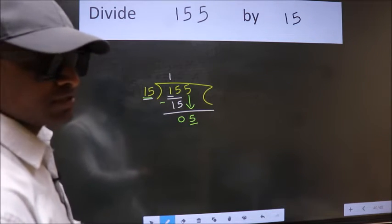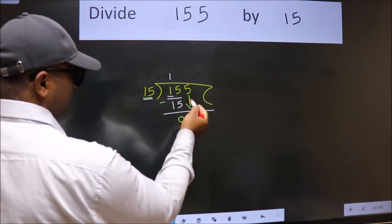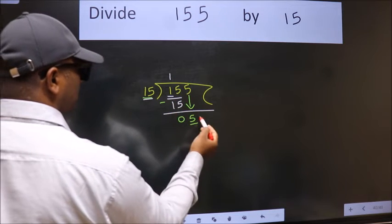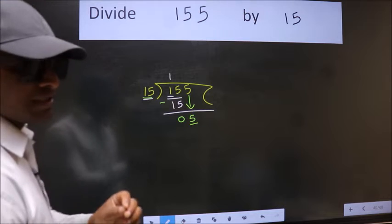Why is it wrong? Because just now you brought this number down. And in the same step, you want to put dot, take 0. Which is wrong.